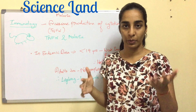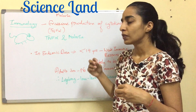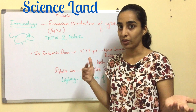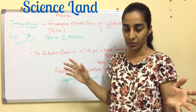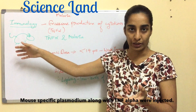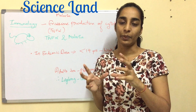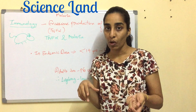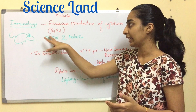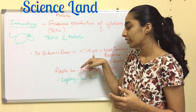Regarding immunology, a cancer patient injected with recombinant TNF-alpha showed symptoms similar to malaria. This led to the hypothesis that excessive release of cytokines, specifically TNF-alpha, may cause extreme symptoms in malaria patients. A mouse model was used — mouse-specific Plasmodium was injected, causing cerebral damage and death. When antibodies against TNF-alpha were injected instead, the mouse survived, confirming that excessive TNF-alpha leads to cerebral damage or death.